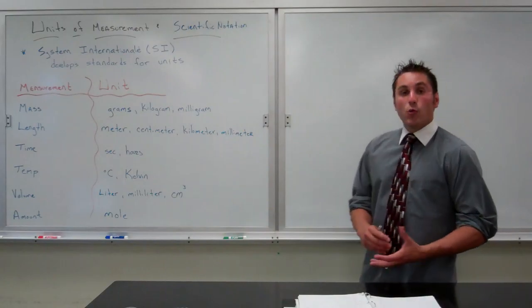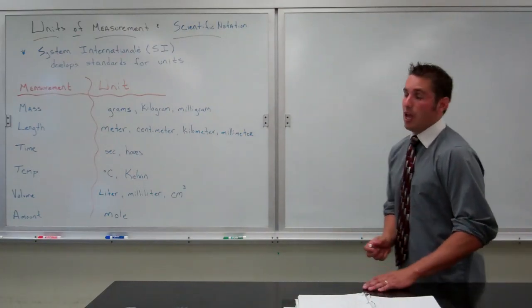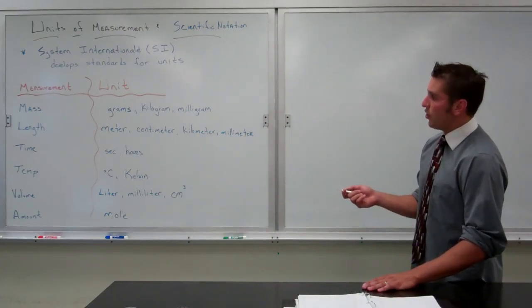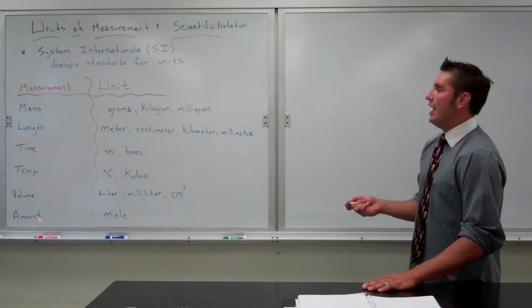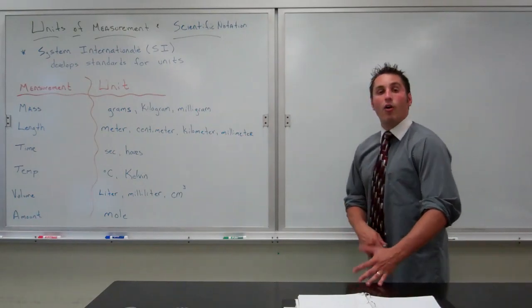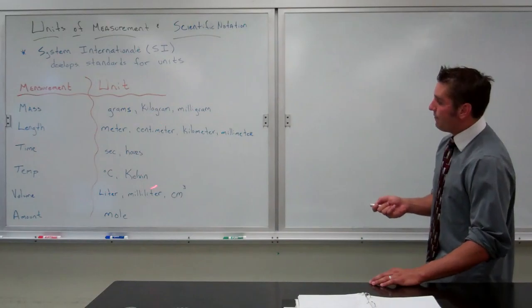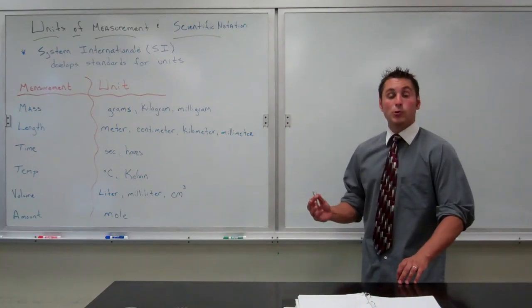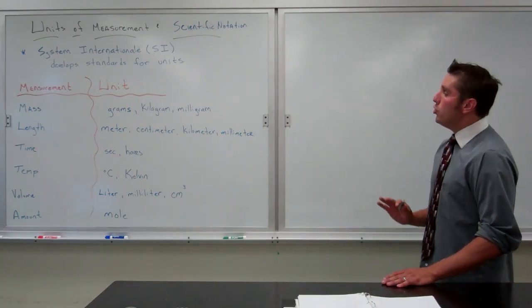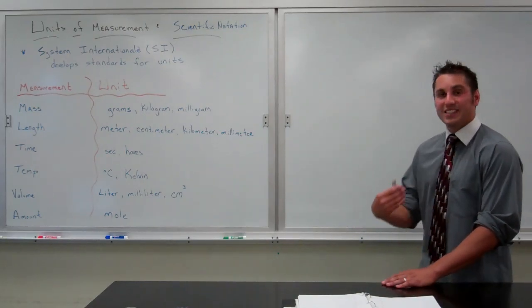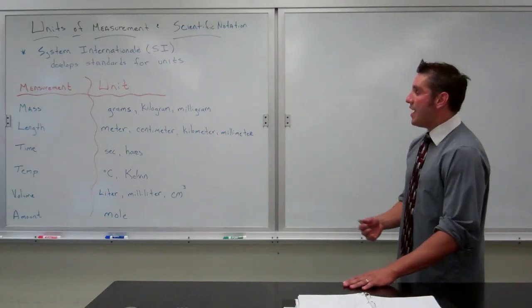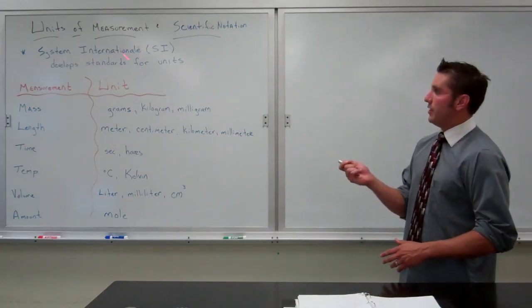In this class, we'll really focus on seven major types of measurements. Those measurements are mass, length, time, temperature, volume, and amount. Although up here I have many different types of units listed, those are the units that we will use, you will notice that they are all based off of one type of what we call base unit. And that base unit comes from the System International.